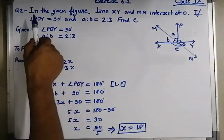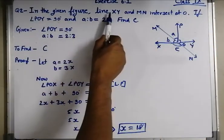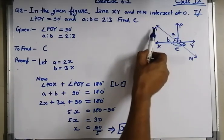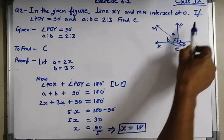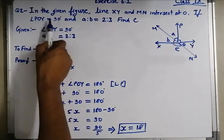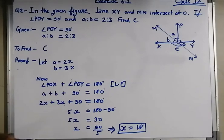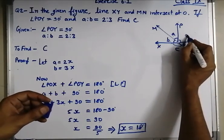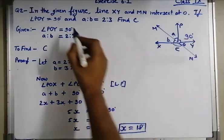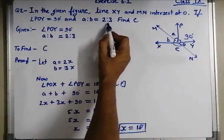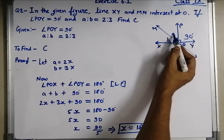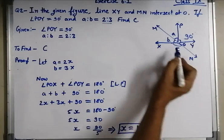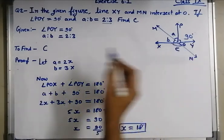Question number 2. In the given figure, line XY and MN intersect at O. If angle POY is equal to 90 degrees, and A is to B is 2 is to 3 — the ratio of A and B is 2 is to 3. We have to find angle C.